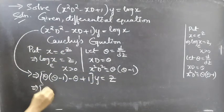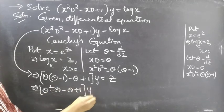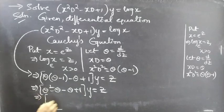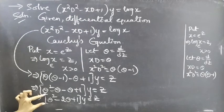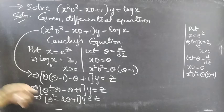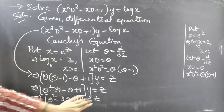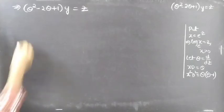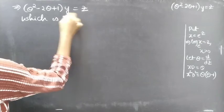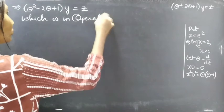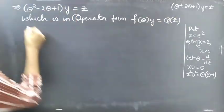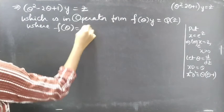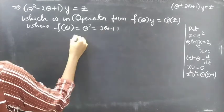Now this equation becomes θ(θ − 1) − θ + 1 into y equals z, replacing log x by z, x D by θ, and x² D² by θ(θ − 1). This becomes θ² − θ − θ + 1 into y equals z. Simplifying, −θ − θ is −2θ, giving θ² − 2θ + 1 into y equals z. This is the operator form f(θ) · y = f(z), where f(θ) = θ² − 2θ + 1.